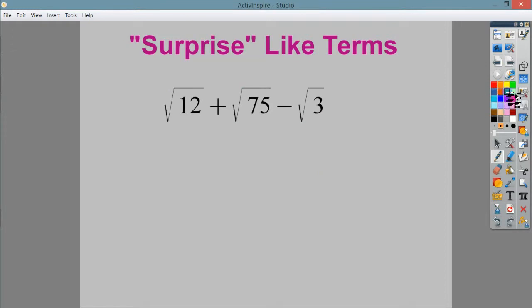Occasionally, you'll do problems that have what I like to refer to as surprise like-terms. You see this problem, well, 12 and 75 and 3 aren't the same thing, so you're thinking that's good, I can just rewrite it or whatever. Yeah, no. Before you determine whether they're like terms, you need to put them in simplest radical form, which is to say that I need to look to see if there are any squares underneath the square root that I can just pull out.